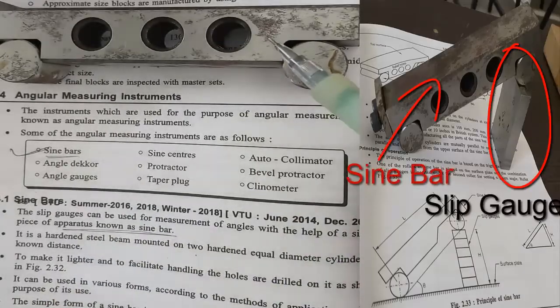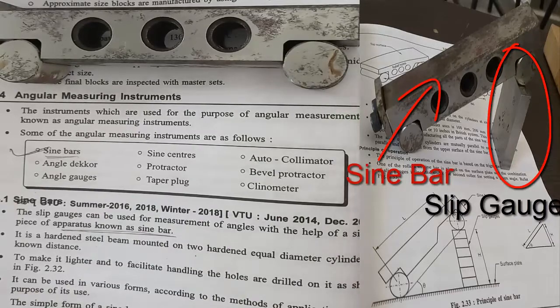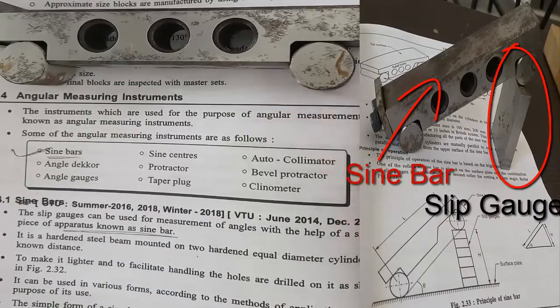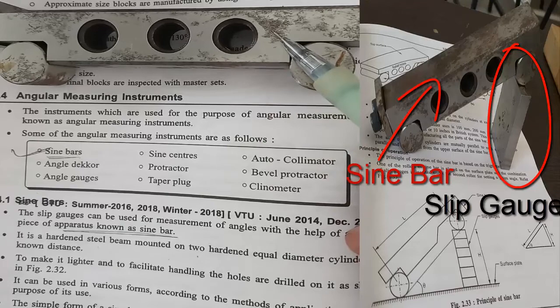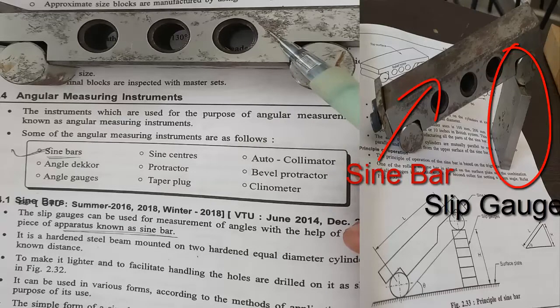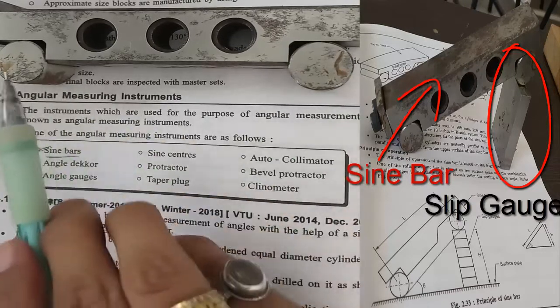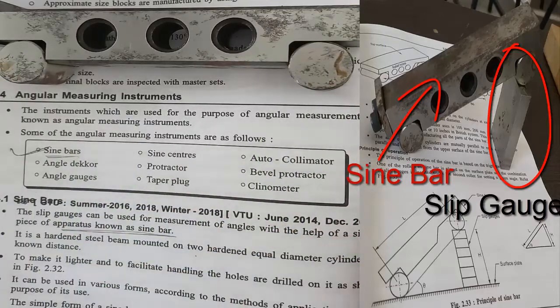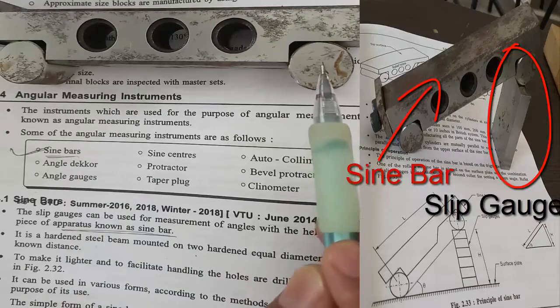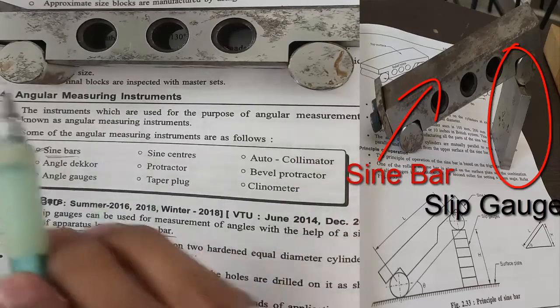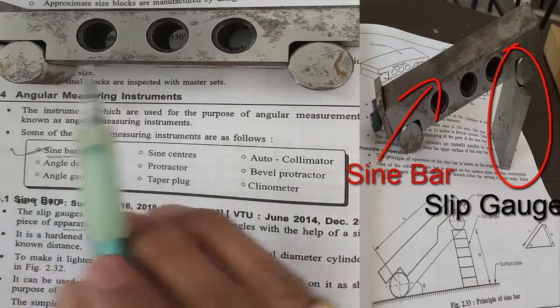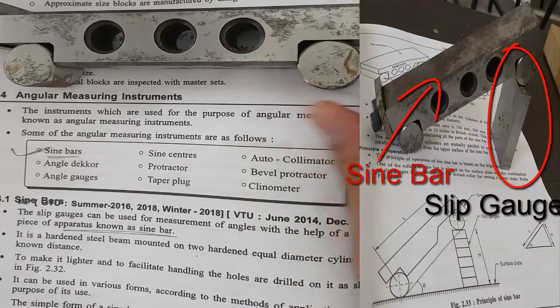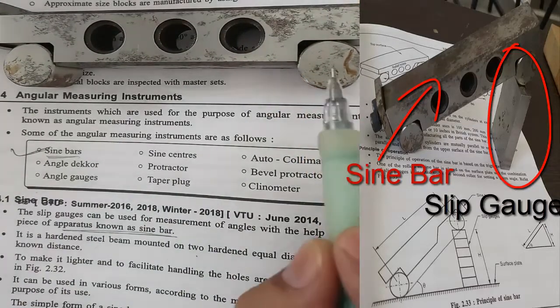The sine bar is a hardened steel beam mounted on two hardened equal diameter cylinders at a known distance. Here, the distance from the center of one cylinder to the center of the other cylinder is exactly 100 mm.